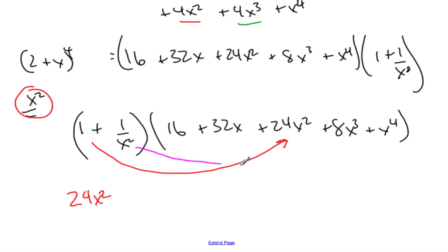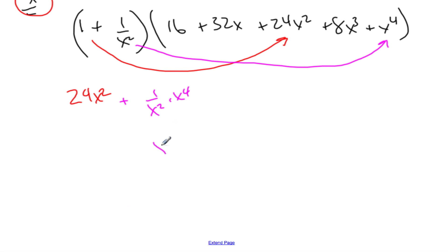When I multiply these two here, that's going to be 1/x^2 times x^4, which is x^2, plus my 24x^2. And so together, that's 25x^2. This here is the x^2 term.